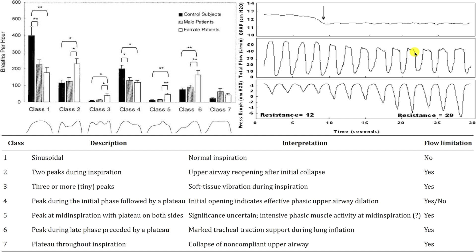To summarize: theoretically, reduction in pressure results in development of flow limitation. Development of flow limitation theoretically translates to increased negative pressure in the airway. Increased negative pressure theoretically translates to increased respiratory effort, which translates into arousals and more fragmented sleep. Each patient needs to be looked at individually — just because there's an increase in negative pressure doesn't mean someone's sleep is going to be fragmented, but these things correlate with each other.